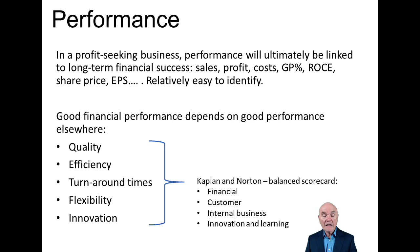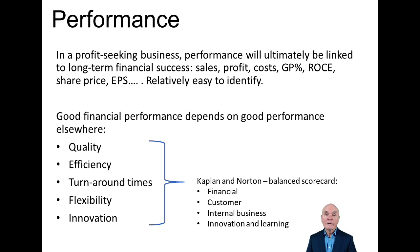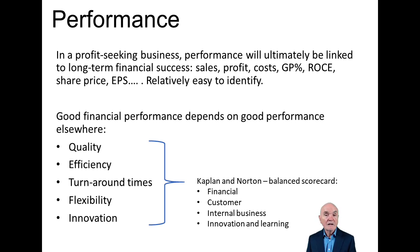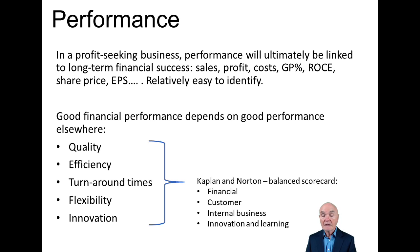Many of these other areas are captured by models such as the Performance Pyramid, which you'll see in the notes. Or here I've set out Kaplan and Norton's balanced scorecard. It says that financial performance lies at the top of the pyramid, so to speak, and that depends on keeping your customers happy. It depends on internal business efficiency - making things quickly, reliably, at a relatively low cost. If you can't do that, you won't have happy customers, and if you don't have happy customers, you won't have sales and a good profit. And the whole edifice rests on constant innovation and learning.